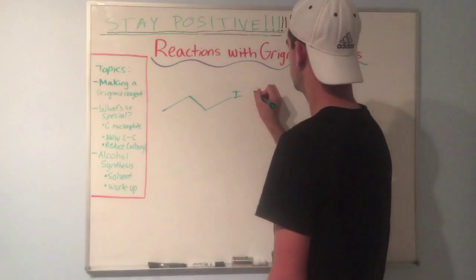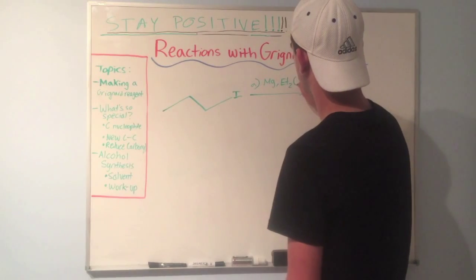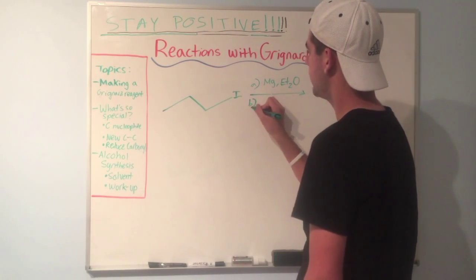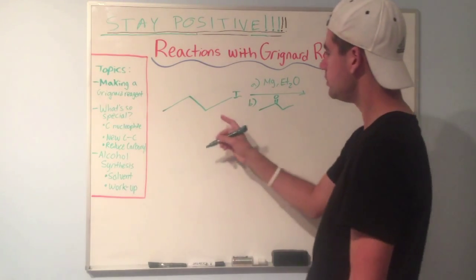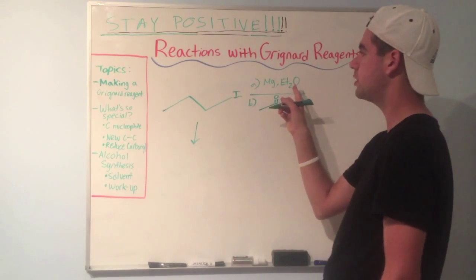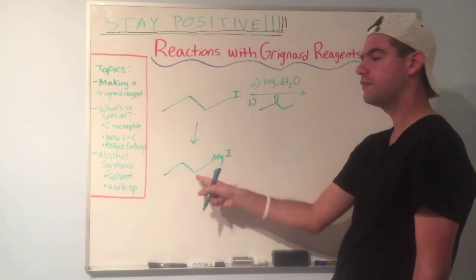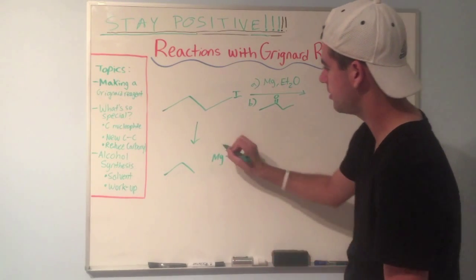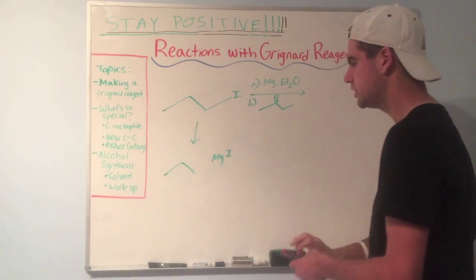Let's look at an example. We're going to react an alkyl halide with magnesium and diethyl ether to form our Grignard reagent. In part B, we're going to react it with a ketone. Part A: form the Grignard reagent. Magnesium makes its way between the iodine and the carbon — that's our Grignard reagent. If it makes it easier, you can erase this bond and make magnesium a plus and the carbon a minus, but I personally just like to remember that the carbon is nucleophilic and keep the bond there.